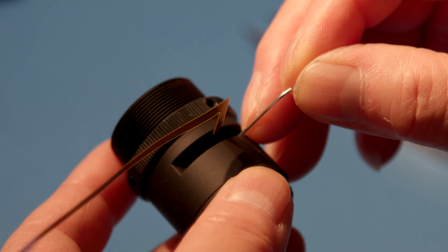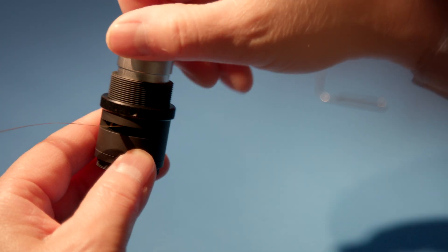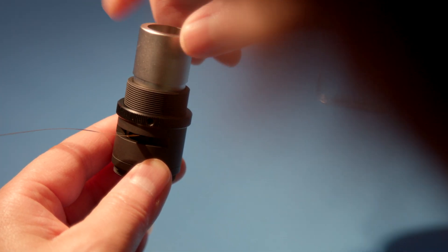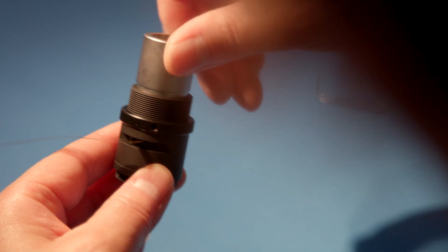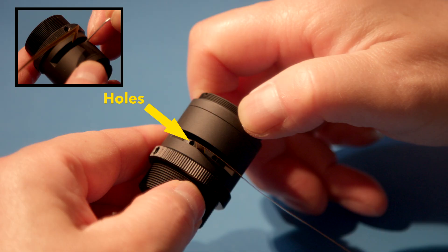Once the front assembly is securely in place, reattach the rear assembly using the spanner wrench. Make sure to hold the liquid lens in place while tightening the rear assembly into the main housing. A small instrument, like a paper clip, can also be inserted into the holes on the side of the liquid lens holder to help keep the liquid lens in place.